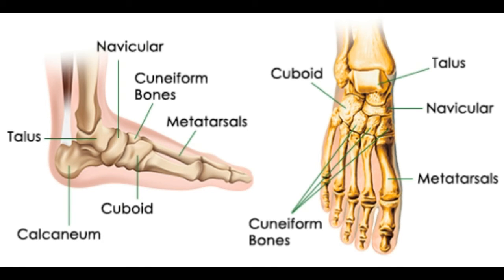In the skeletal system, the calcaneus is situated between the tarsal bones and cuboid. Talus — this bone is sandwiched between the tibia at the top, the fibula around the sides, and the calcaneus below.